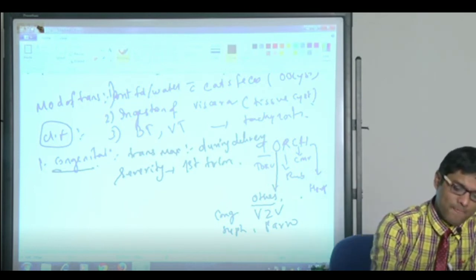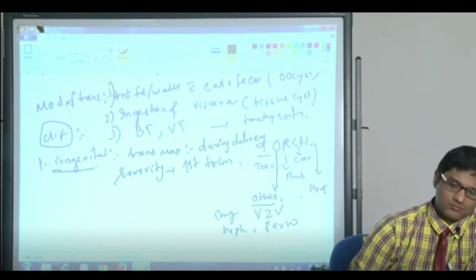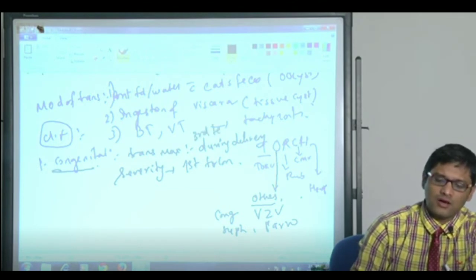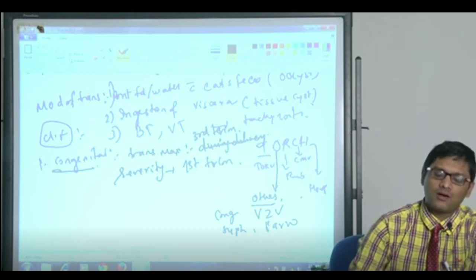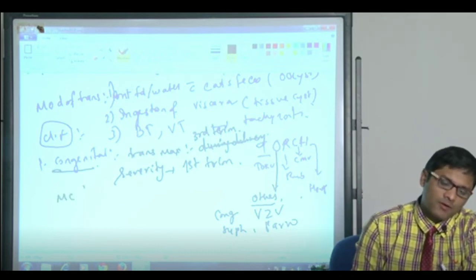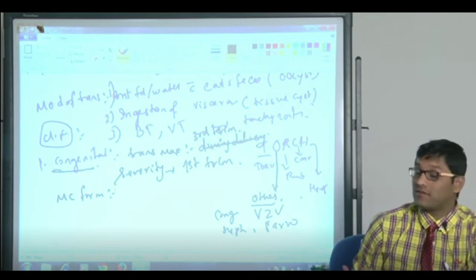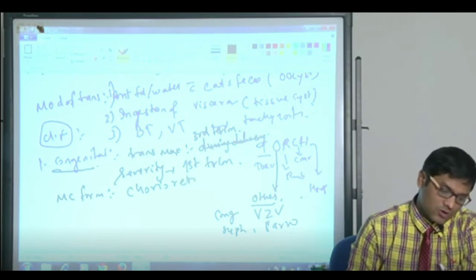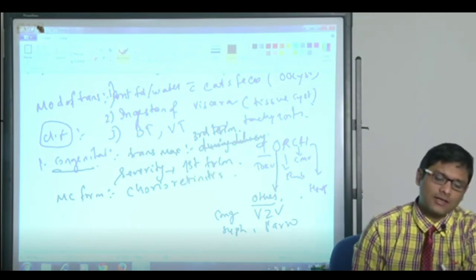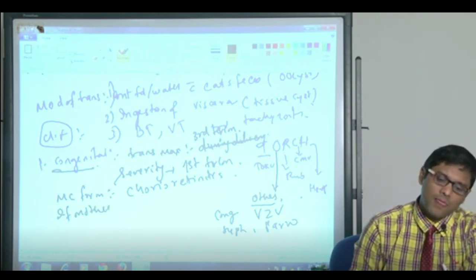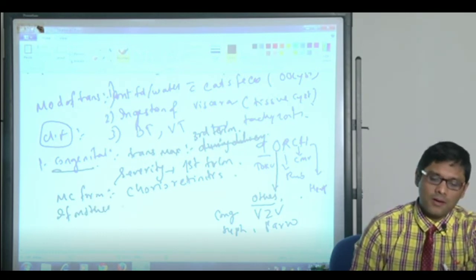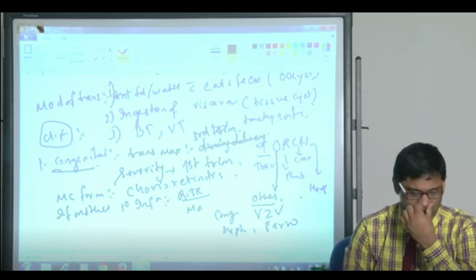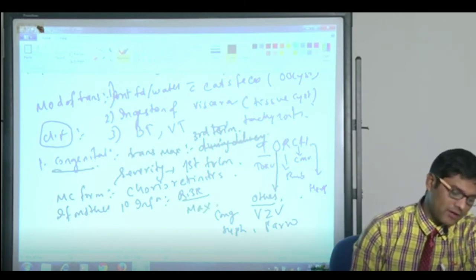During delivery or third trimester, the transmission is relatively maximum. The most common manifestation of congenital toxoplasmosis is chorioretinitis. As I told you earlier, if the mother is having primary infection, then the risk is maximum. Maximum risk if the mother is having primary infection.